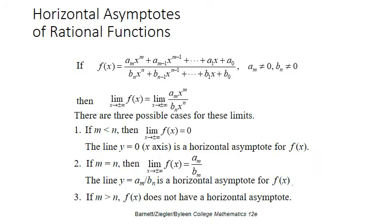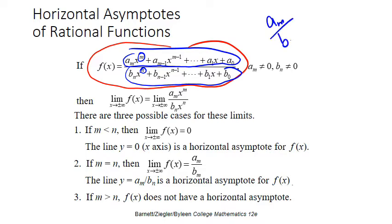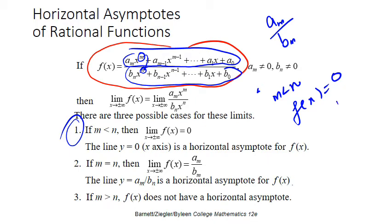There are some formulas to find horizontal asymptotes directly. Look at this general rational form. We find the maximum power of x in the numerator, which is m, and the maximum power of x in the denominator, which is n. We also take care of their coefficients: aₘ in the numerator and bₙ in the denominator. Case 1: if m is less than n, then the horizontal asymptote is y equals 0.